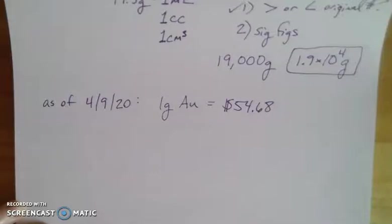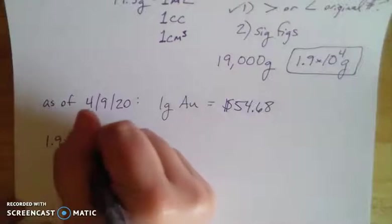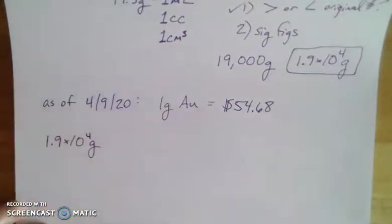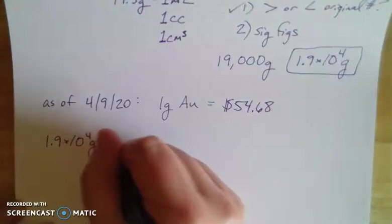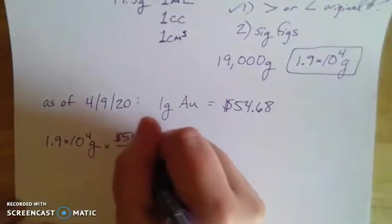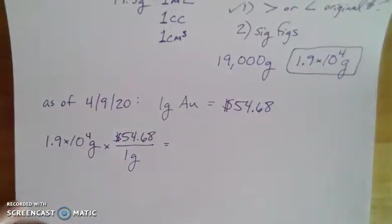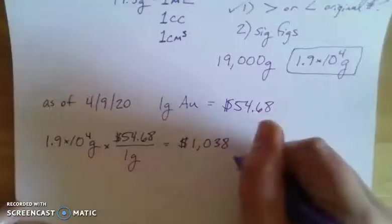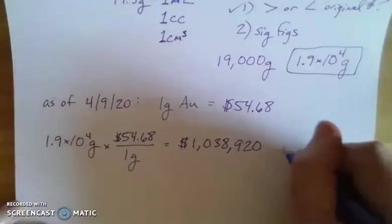wonder about things. As scientists, we're always curious about the world - we wonder about the way things work. If I have this much, I wonder how many skittles I could buy with it. So if I have one gram and that's $54.68, then it comes out to a whopping $1,038,920. Wow!